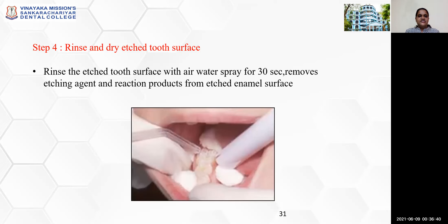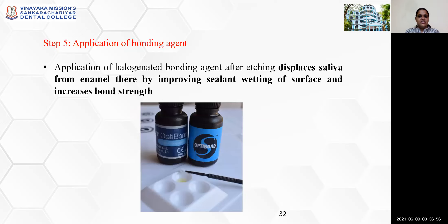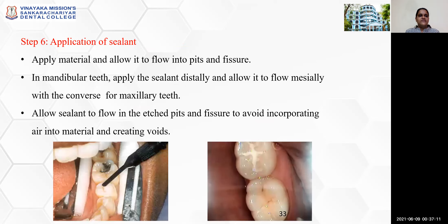Step 4 is to rinse and dry the etched tooth surface with water spray for 30 seconds to remove the etching agent and reaction products from the etched enamel. Step 5 is application of a bonding agent. Application of a halogenated bonding agent after etching displaces saliva from enamel, thereby improving sealant wetting of the surface and increasing bond strength. Step 6 is application of sealant. Apply the material and allow it to flow into pits and fissures. In mandibular teeth, apply distally and allow it to flow mesially, with the converse for maxillary teeth, to avoid incorporating air and creating voids.